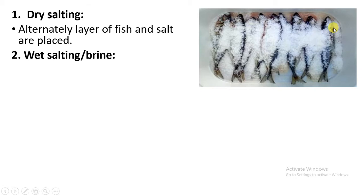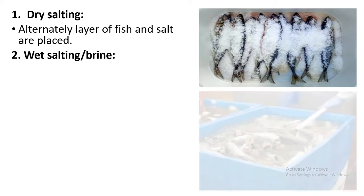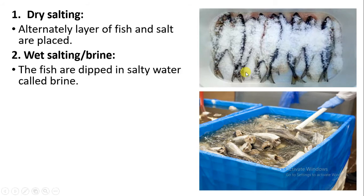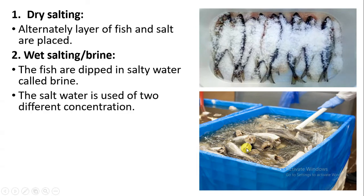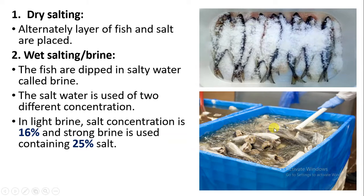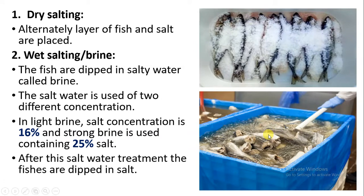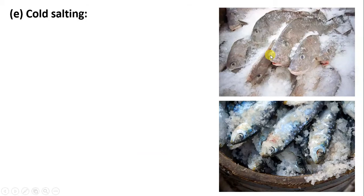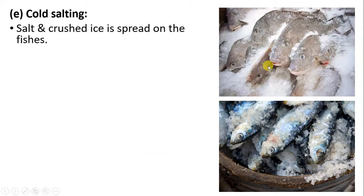The next salting method is wet salting, also called brine. Fish are dipped in salty water, called brine. This salt water is used at two different concentrations: if light brine is used, the salt concentration is only 16 percent; if strong brine is used, the salt concentration is 25 percent. After the salt water treatment, the fishes are then again dipped in salt only.